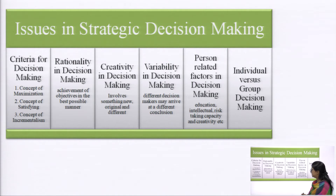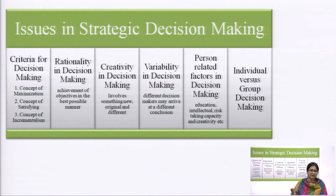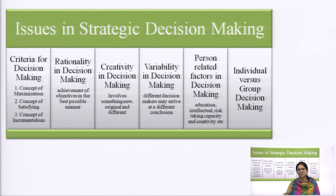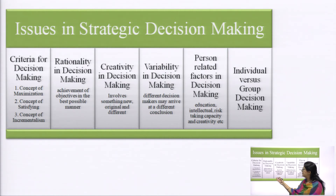Now we look at various issues in strategic decision making that you must keep in mind while framing decisions. The first issue is the criteria for decision making. The main criteria is objective setting — if you do not have an objective, there is no use for a decision. You are making a decision because you have an objective to achieve. So the objective is the main criteria for decision making.